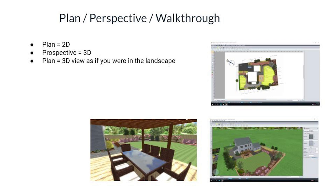Perspective view is 3D and is where most details are added. Walkthrough is also a 3D view where we view the design as a person walking through the property. You can manually walk through or set a camera path that will automatically take you through the design. The time of day can be changed in this mode. AutoCAD and Dynascapes only have a plan view.